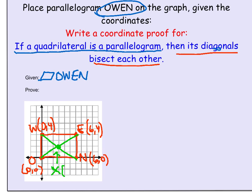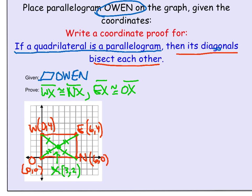We can count and see that point X is the ordered pair (3, 2). We are going to prove that the diagonals bisect each other, which means WX has to be congruent to NX, and EX has to be congruent to OX. We know the word bisect means cut in half, so when we draw the diagonals, if they bisect each other, these two pairs of pieces each have to be congruent.